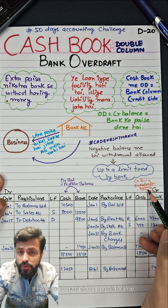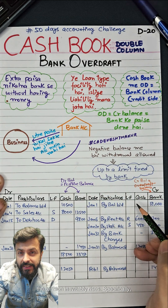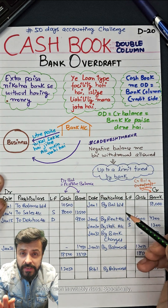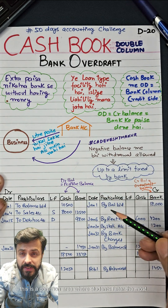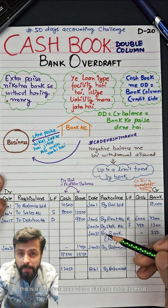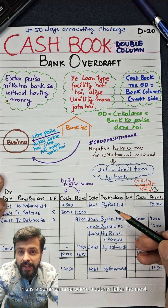If the bank account shows a credit balance, the tension inevitably rises. Specifically, this is a common area where students falter the most.